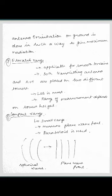The elevated range is applicable for very smooth terrains. Both the transmitting antenna and the antenna under test are kept on different towers at different heights, but they still maintain line of sight. The range of measurement depends on tower height — increasing the tower height directly increases the measurement range.